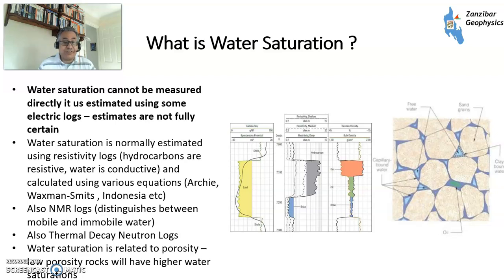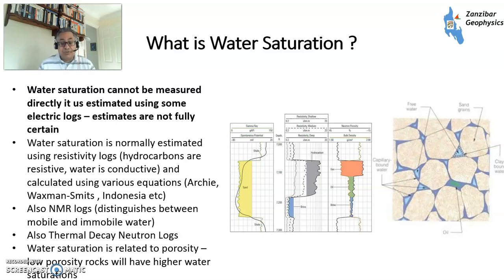Also, nuclear magnetic resonance logs, which essentially measure mobile water - that's quite important, but they're relatively new and quite expensive to run. There are also thermal decay neutron logs, which you would use in a cased hole because resistivity tools generally only work in open hole, not behind steel casing. Water saturation is directly related to porosity - low porosity rocks tend to have higher water saturations.